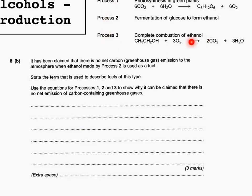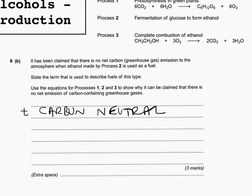So this is the second part of this question. It has been claimed that there is no net carbon emission to the atmosphere when ethanol is made by process two and used as a fuel. State the term that is used to describe fuels of this type and then use the equations for processes one, two, and three to show why it can be claimed that there is no net emission of carbon contained in greenhouse gases. So the term that is used to describe fuels that have no net emission of carbon to the atmosphere we have already said is carbon neutral. They're much more likely to ask you to define carbon neutral than to remember what the term is.